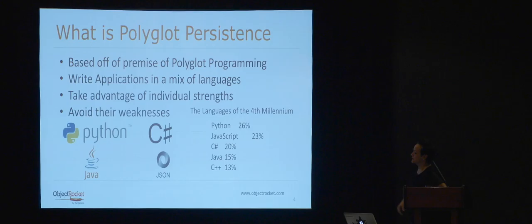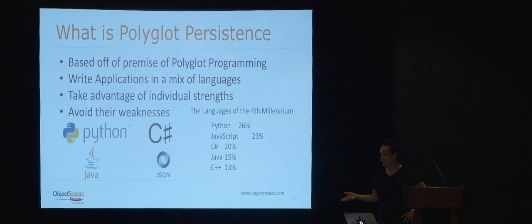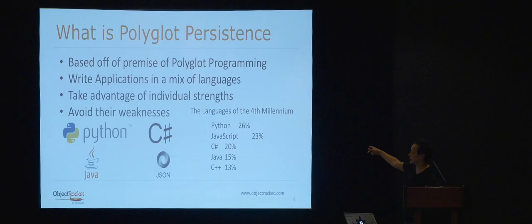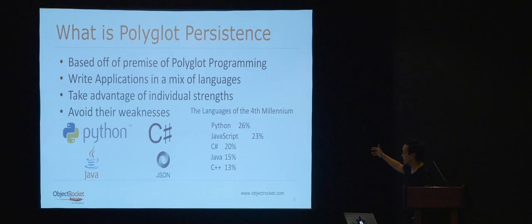So what is Polyglot Persistence? Basically, it began from the premise of utilizing polyglot programming — using the correct technology and the correct language for the specific task it works best for. Just like you don't use one language for everything. In terms of market share, Python is still by far the largest at around 3% lead over others.